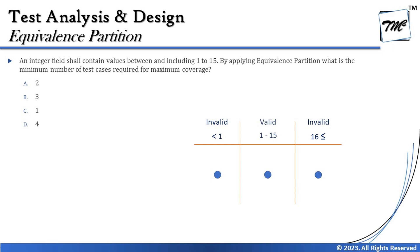The question asks: by applying equivalence partitioning, what is the minimum number of test cases required for maximum coverage? To solve this, create a table with the partitions. The first range is less than 1, then 1 to 15, then 16 and above. Operators are very important — less than 1 means zero and below, while less than or equal to 1 means one and below. Getting operators wrong leads to wrong answers.